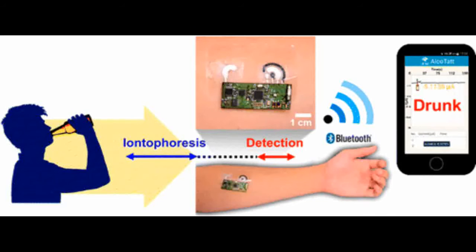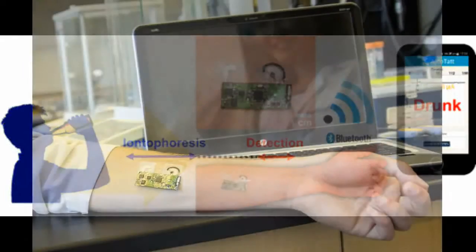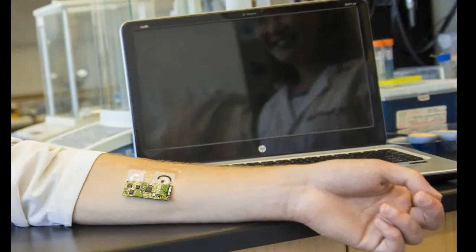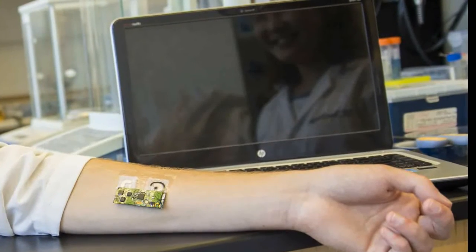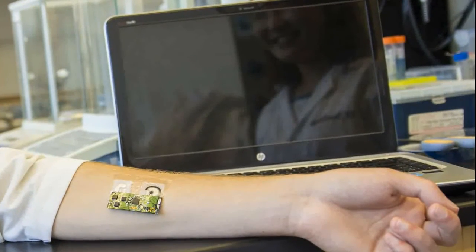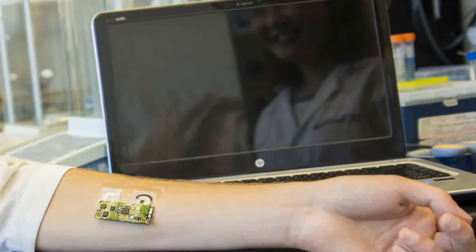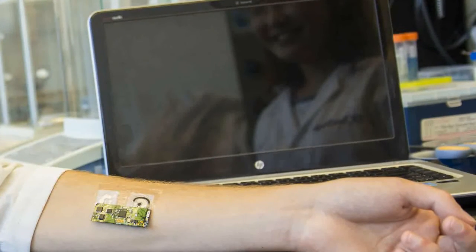Lots of accidents on the road are caused by drunk driving. This technology provides an accurate, convenient and quick way to monitor alcohol consumption to help prevent people from driving while intoxicated. The device could be integrated with a car's alcohol ignition interlocks, or friends could use it to check up on each other before handing over the car keys.